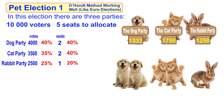Looking at the final vote: the dog party had 40% of the votes and got 40% of the seats. The cat party gets 35% of the votes and gets 40% of the seats. The rabbit party has 25% and gets 20%. So they're all very close — the cat gets slightly more, the rabbit gets slightly less. But for this sort of election, the D'Hondt method works very well.